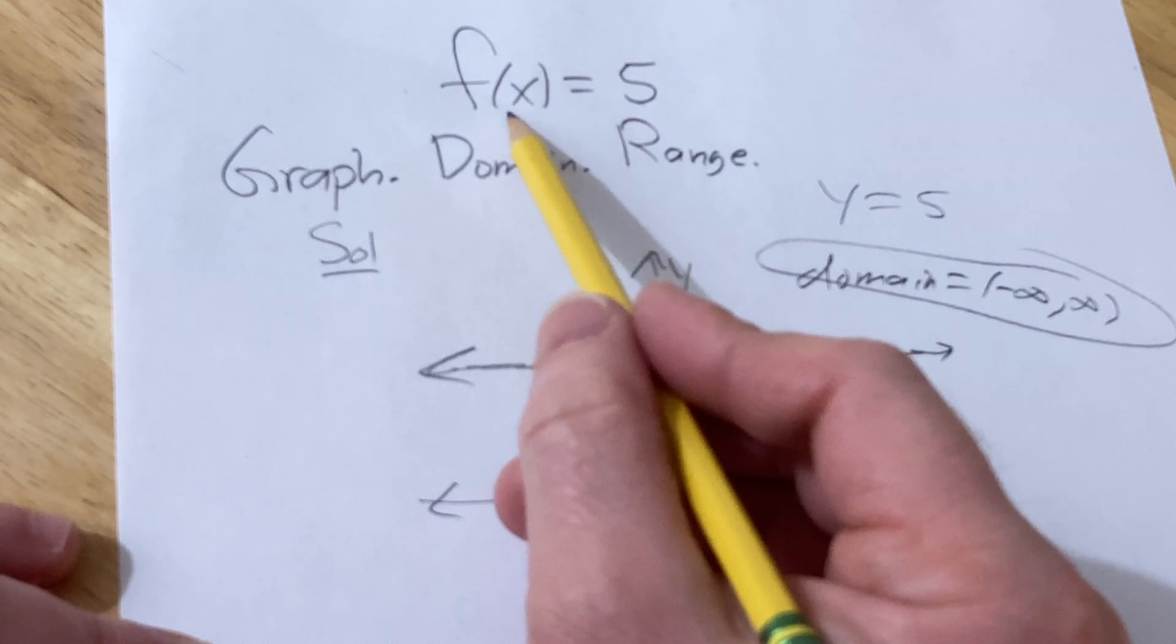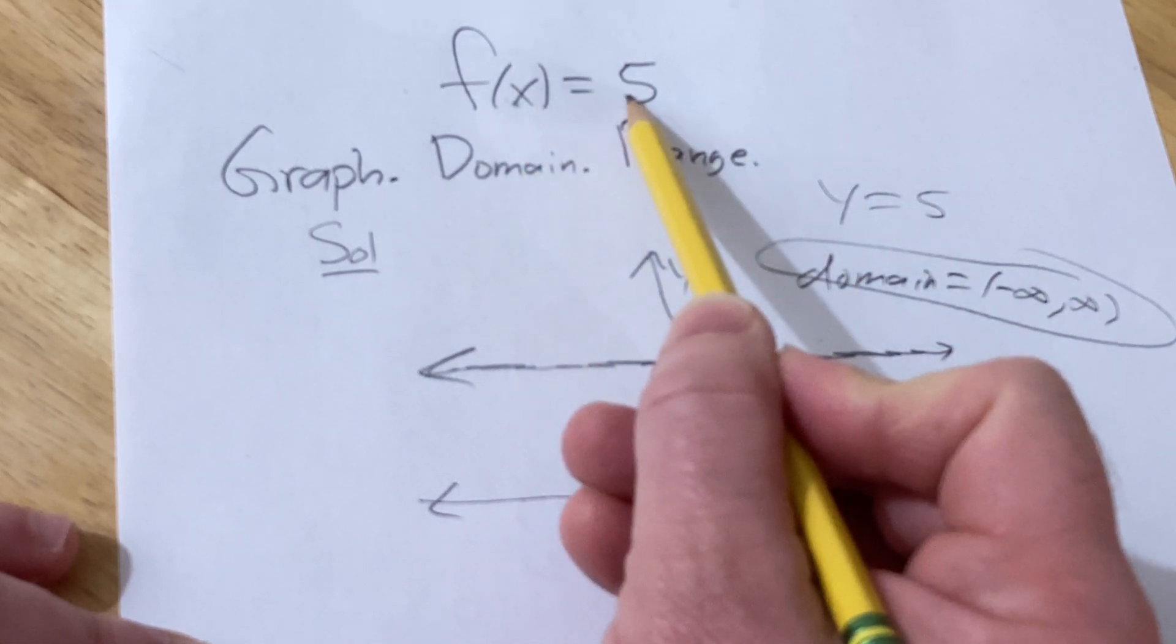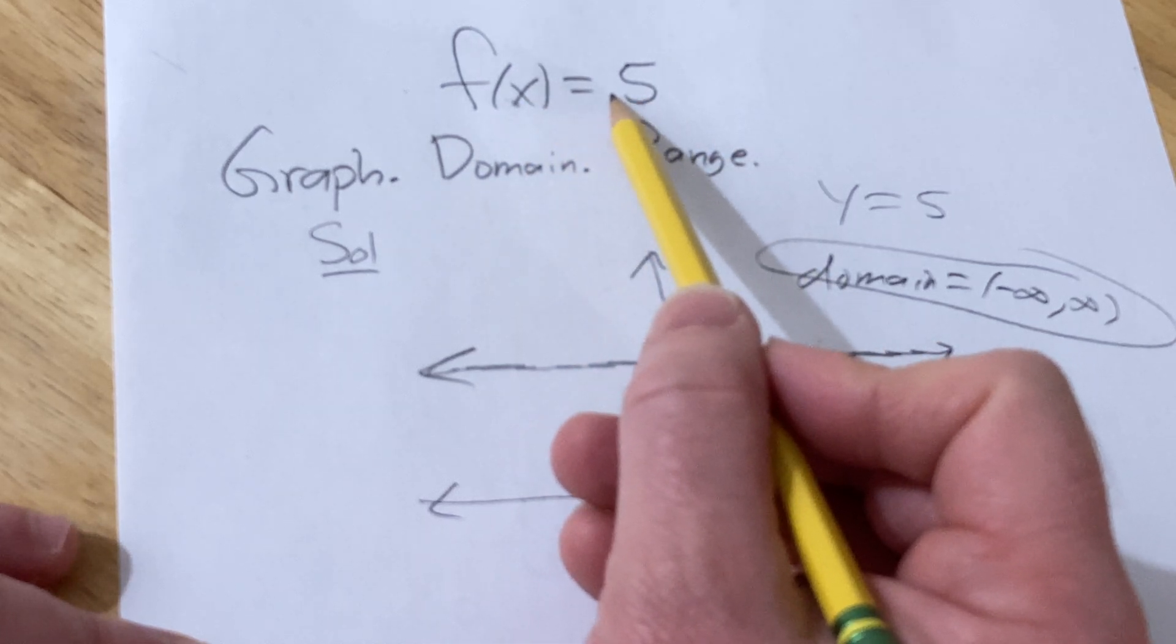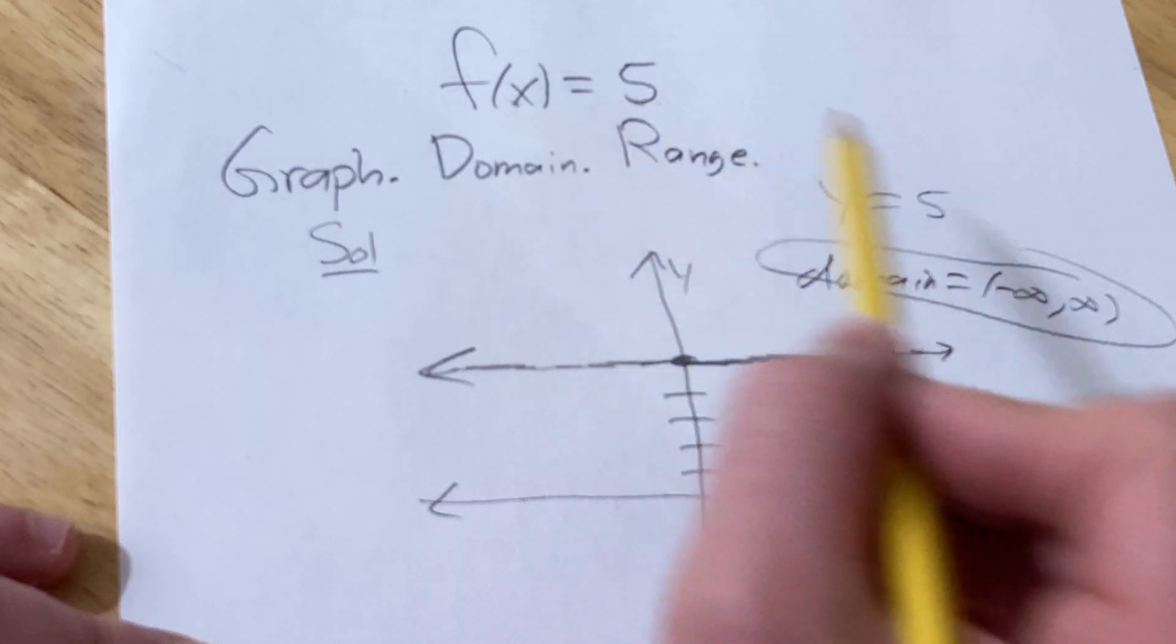Looking at the function, we can argue the same, a similar way. No matter what x-value I plug in here, I'm going to get 5. And there's no restrictions, right? I'm not dividing by x. There's no square roots. There's nothing funny going on, right? So all real numbers.